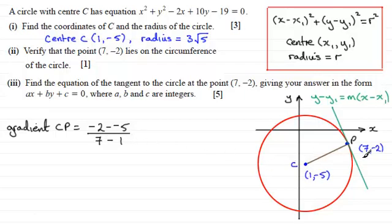I could do it the other way around, it doesn't make any difference. I could do minus 5 minus minus 2 divided by 1 minus 7. I'll still get the same answer.